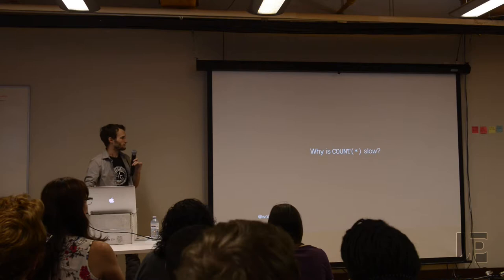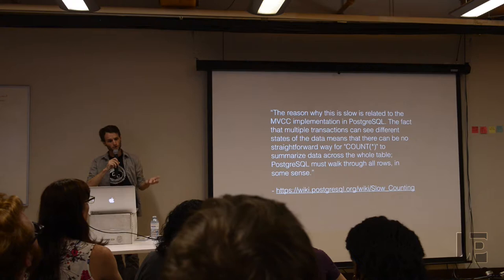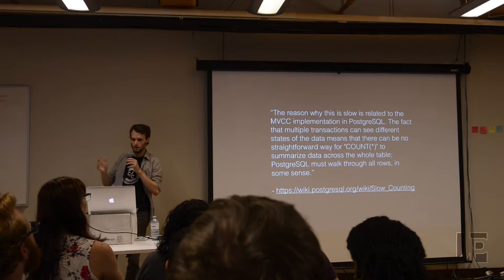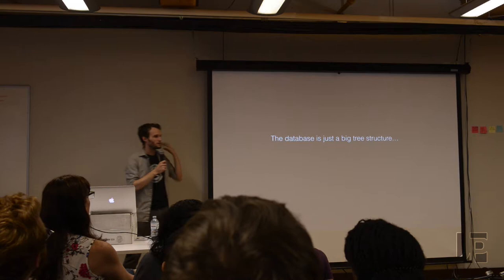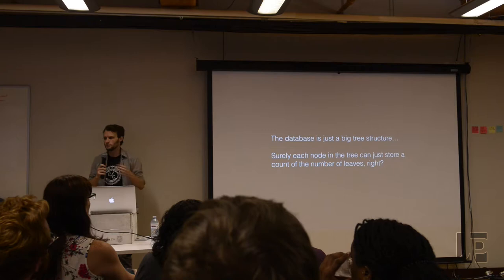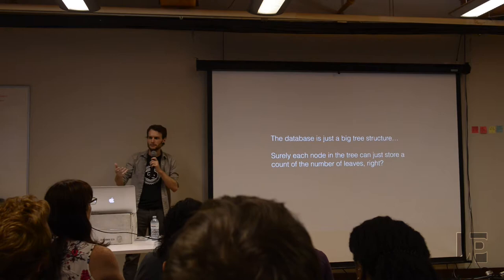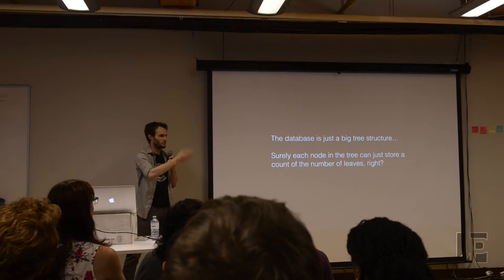If you Google around a bit, you'll find the Postgres wiki which says the reason this is slow is related to the implementation of PostgreSQL — the fact that multiple transactions can see different areas of data means there's no straightforward way for COUNT(*) to summarize data across the whole table, and Postgres must walk through all rows in some sense. Probably what you're thinking is: a database under the hood is just a big tree structure, and surely each node can store the count of nodes underneath it, cached after the first walk.